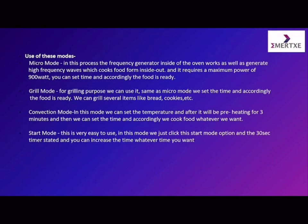In micro mode, the frequency generator inside the oven generates high frequency waves which cook the food from inside out. In grill mode, used for grilling purposes, we set the time accordingly and the food is ready — we can grill items like bread, cookies, meat, etc. In convection mode, we set the temperature, preheating for three minutes is done, then we set the time and cook the food. In start mode, we simply click the start option and a 30-second timer starts; we can increase the time as needed.